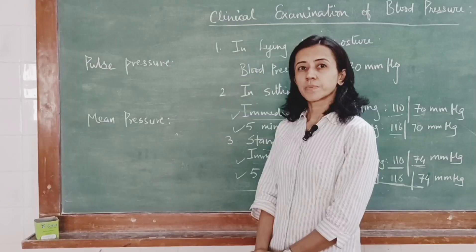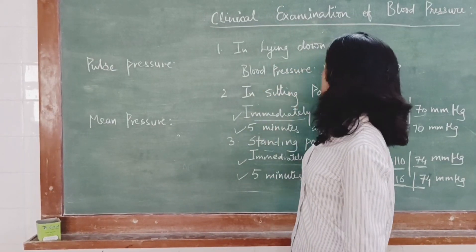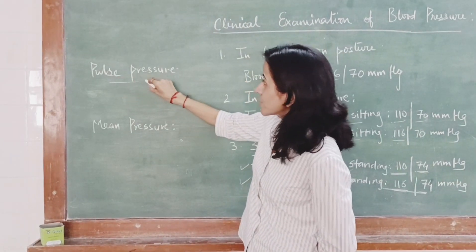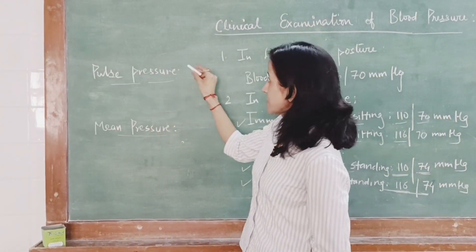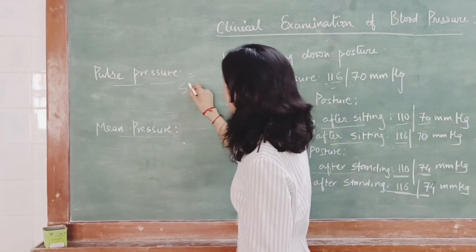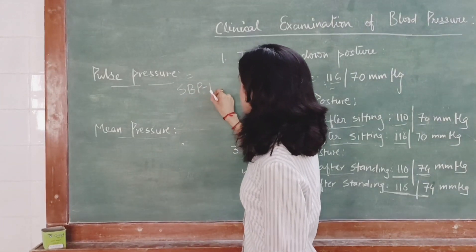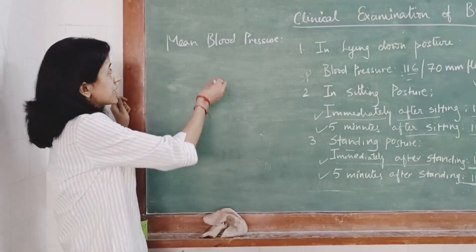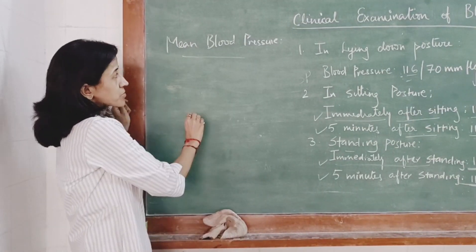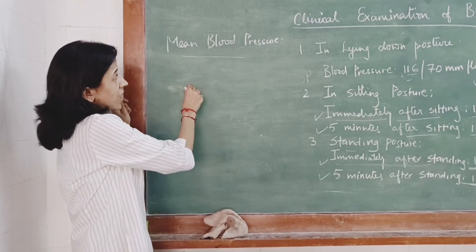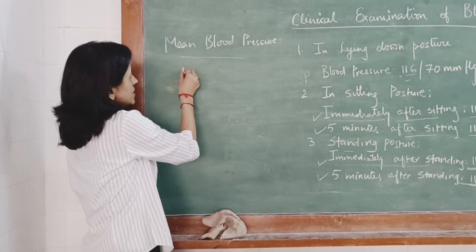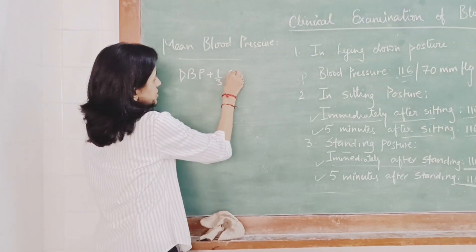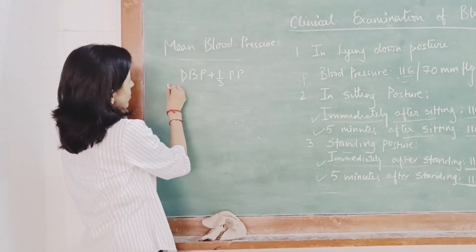Now, how to calculate pulse pressure and mean pressure. Pulse pressure is equal to systolic blood pressure minus diastolic blood pressure. Mean blood pressure is calculated from the formula — diastolic blood pressure plus one-third of pulse pressure. This formula is sometimes asked as an MCQ.